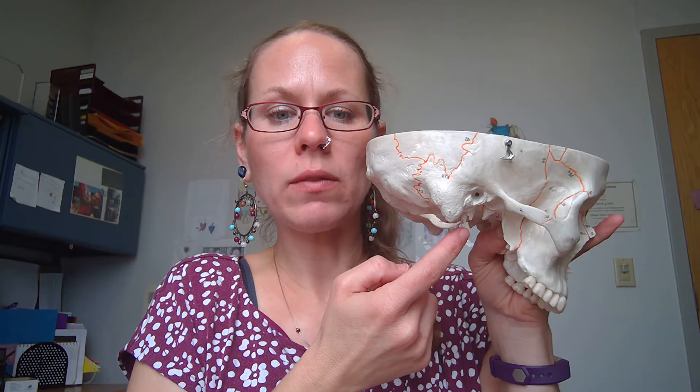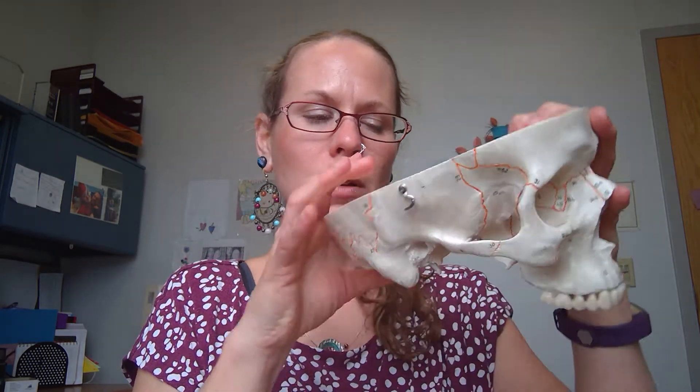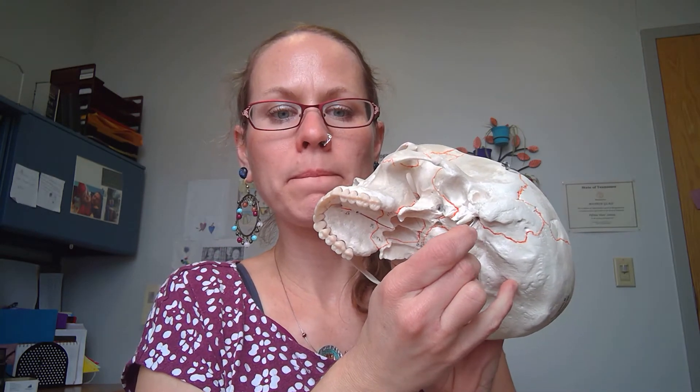Then you have sticking out here what's called the styloid process. It's named styloid as in like a stylus — that'd be like a writing tool. So remember we had this stylomastoid foramen: once you've identified your styloid process and your mastoid process, it's going to be a little bit easier for you to find the foramen which is located right in between them.